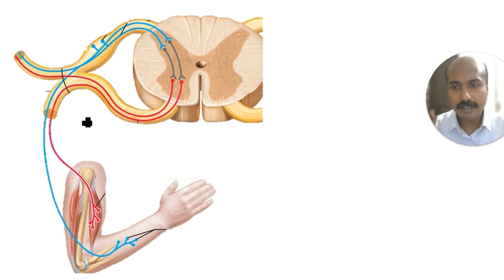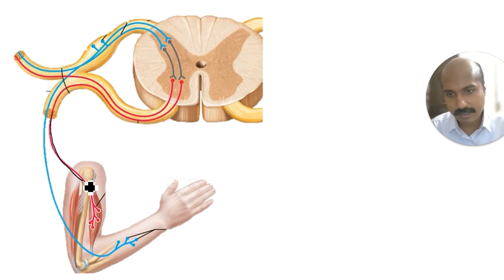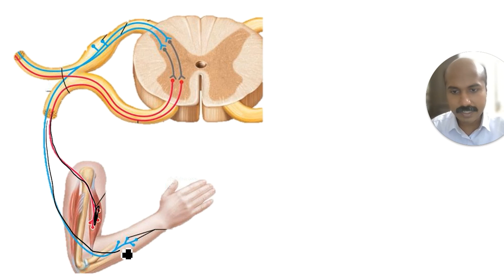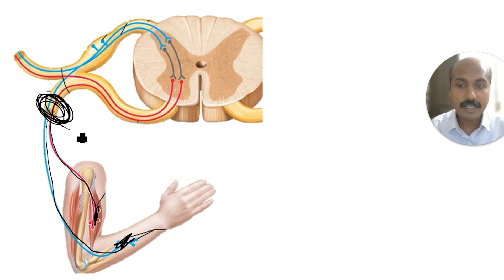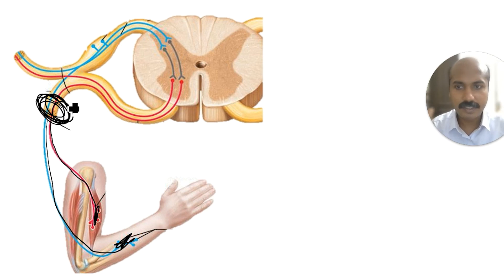You can see the difference here — this is coming and innervating a muscle, while this is coming and innervating the skin. So if you have a lesion of the ventral ramus, it will cause affliction of both sensory and motor functions.